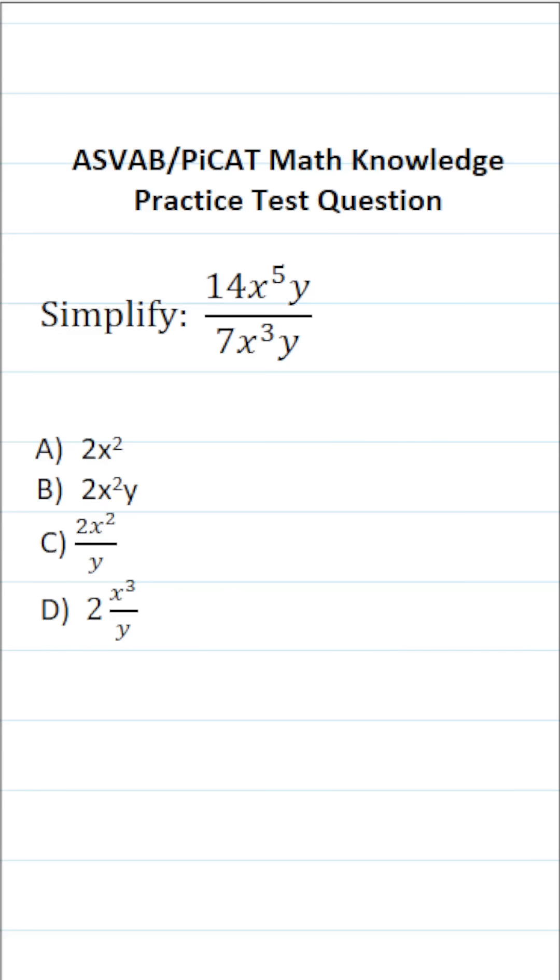This math knowledge practice test question for the ASVAB and PICAT says simplify 14x to the 5th y divided by 7x to the 3rd y.